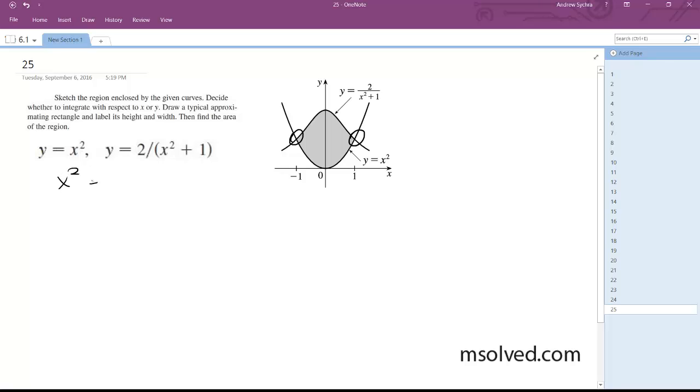You would just set x squared equal to 2 over quantity x squared plus 1. Either trial and error or you can go through a lot of effort and multiply it all out even though it's kind of a pain. But plugging in negative 1 squared equals 2 over negative 1 squared plus 1 equals 1 equals 2 over 2, which is correct, and for 1 it's the same thing.